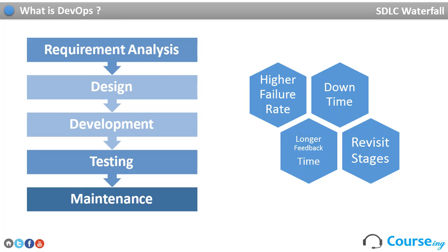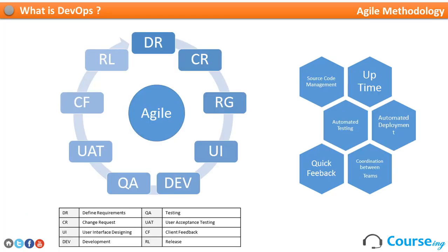So the questions are: how do we overcome these challenges? What can be done so that every stakeholder is continuously informed about the progress of software development? By stakeholder I mean every individual member involved in software development from requirement to deployment. How can we easily accommodate changes into the software development without waiting for long feedback from the customer? This is where agile methodology perfectly fits.